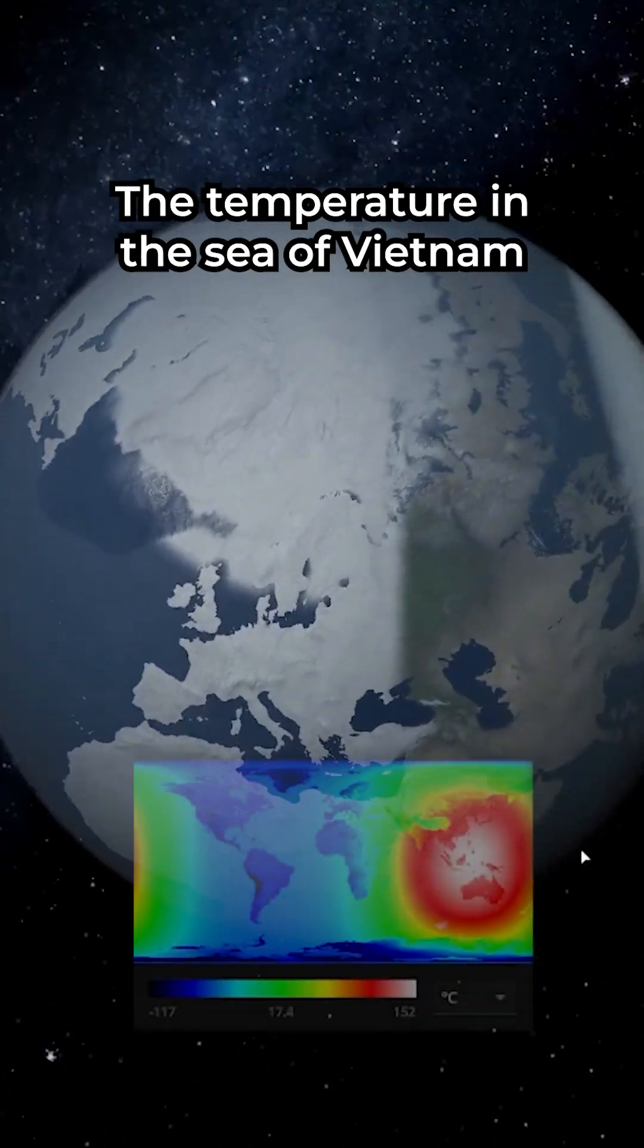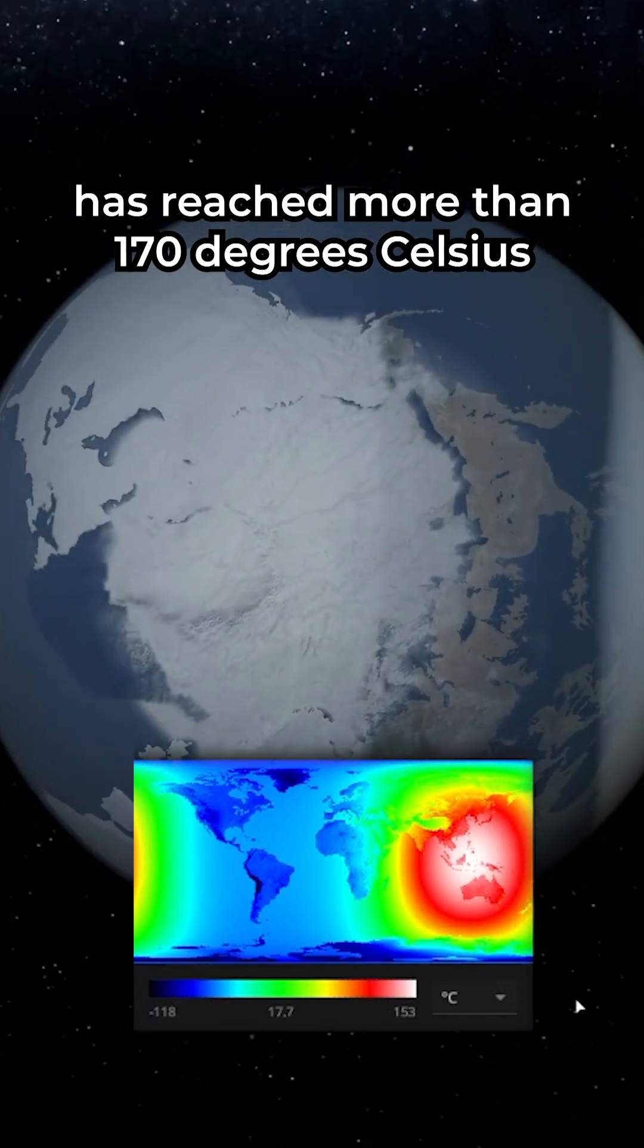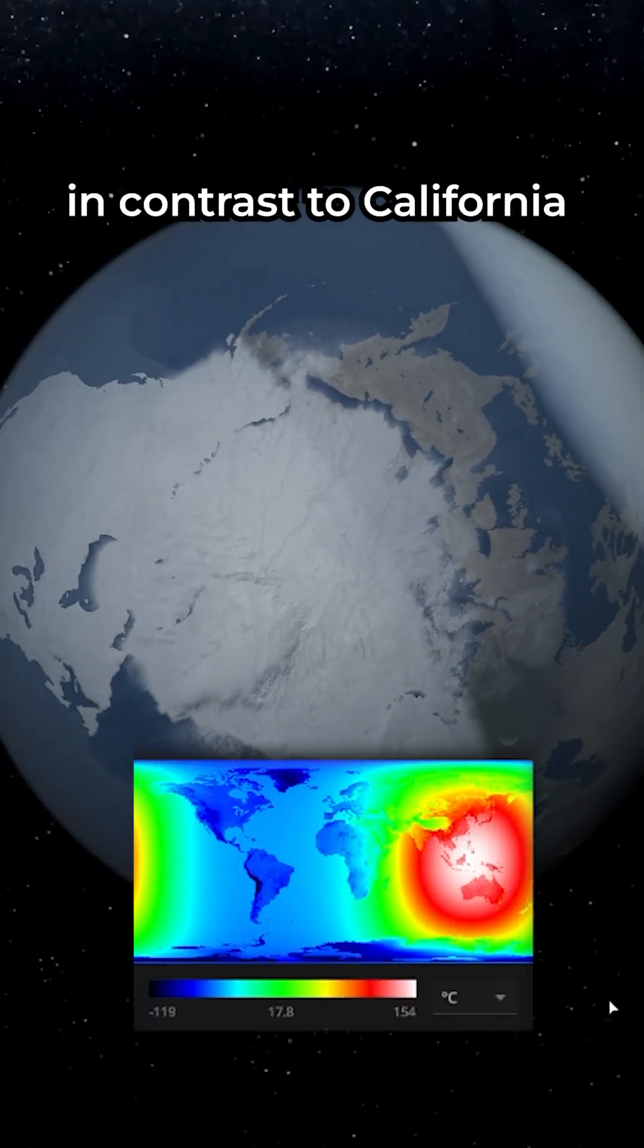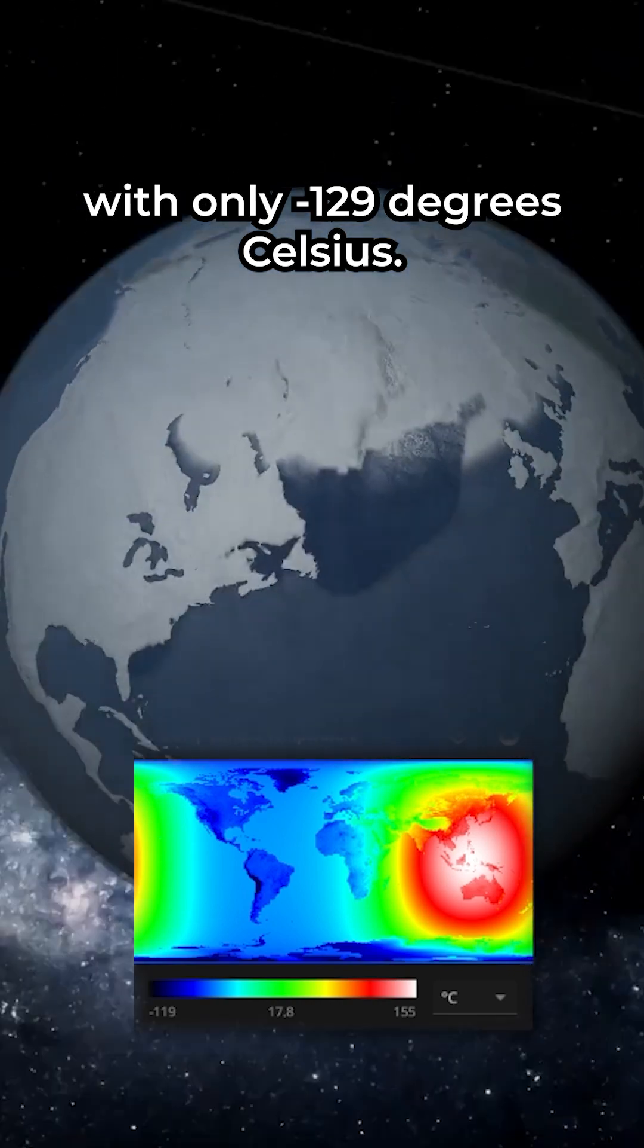The temperature in the Sea of Vietnam has reached more than 170 degrees Celsius, in contrast to California with only minus 129 degrees Celsius.